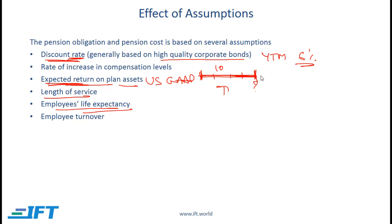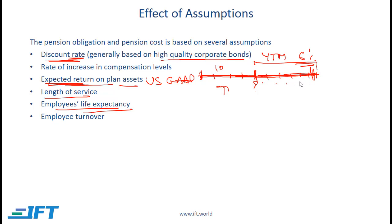If a company is making pension payments after a person retires — for instance, payments until the person is alive — then the longer that person lives, the higher the payments made by the company. So companies need to estimate how long people will live, and if the assumption is that people will live longer, the pension obligation will be higher.